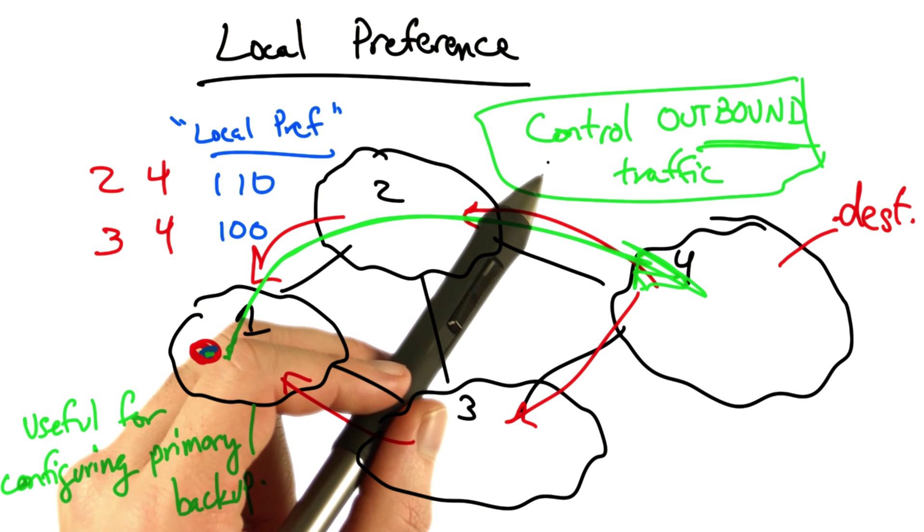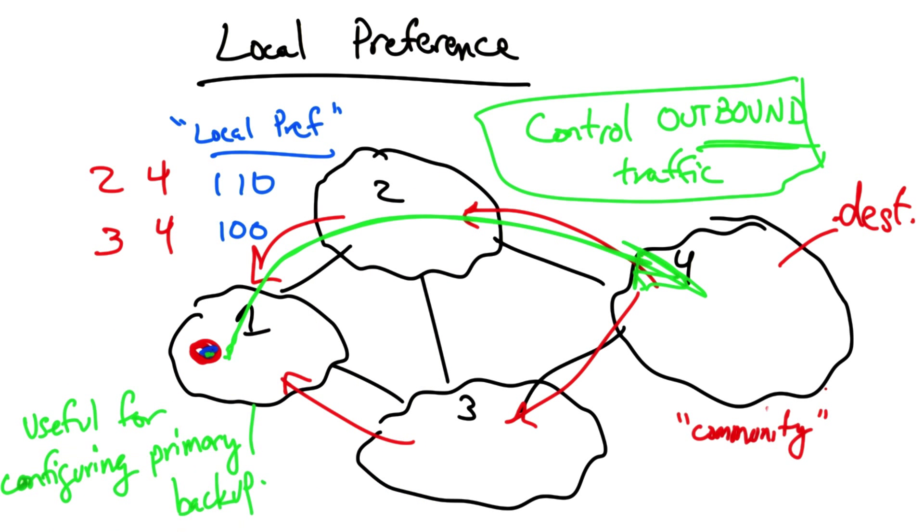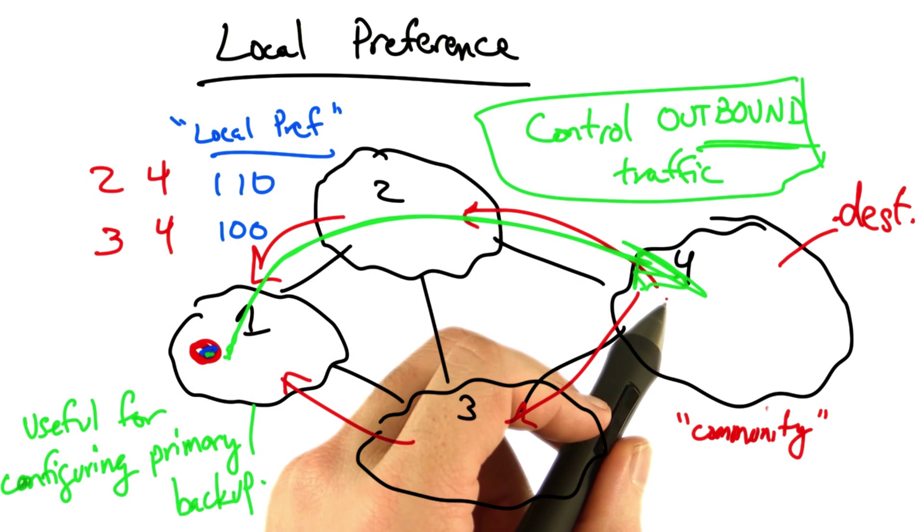Now typically, as I mentioned, local preference is used to control outbound traffic. But sometimes, autonomous systems can attach what's called a BGP community to a route, to affect how a neighboring autonomous system sets local preference. A community is nothing more but a fancy jargon word for a tag on a route.